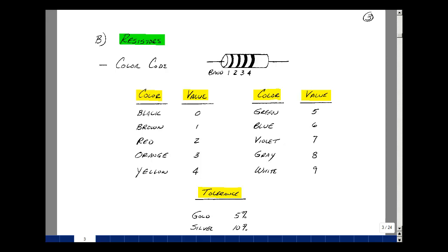The colors associated with a value. Black is zero, brown is one, red is two, orange is three, yellow is four, green is five, blue is six, violet is seven, gray is eight, and white is nine.